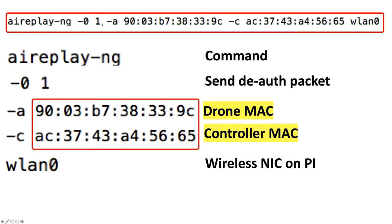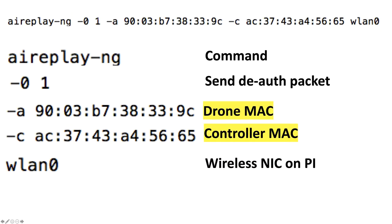These are the commands I'm running from Aircrack — specifically a part of the Aircrack suite called airreplay-ng. These are MAC addresses — a unique identifier for each network card. This identifier is the MAC address of the drone, and on the right-hand side is the MAC address of the smartphone. If I were an external threat actor who didn't know the MAC addresses, how would I find them? I would put the network card into something called monitor mode.